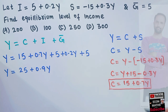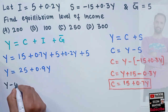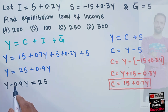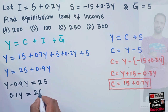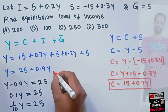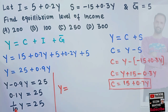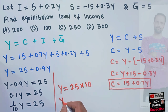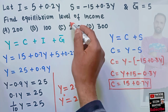Transposing, Y minus 0.9Y is equal to 25. Subtracting 0.9Y from Y gives us 0.1Y equal to 25. Since 0.1 can be written as 1 upon 10, we get Y equal to 25 multiplied by 10, which gives our equilibrium level of income equal to 250. That means the correct option should be 250.